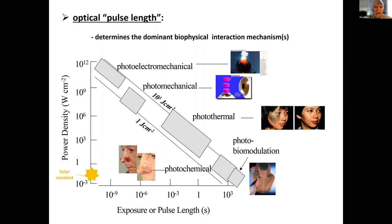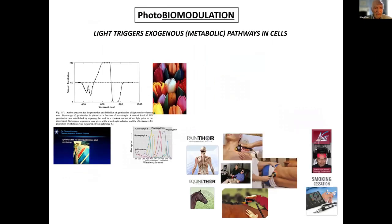For instance, biomodulation. You can use light to trigger existing metabolic pathways. This is used in horticulture for controlling the blooming of flowers, but is used widely also in human and veterinary medicine, sometimes controversially, for so-called photobiomodulation treatment of usually chronic conditions.